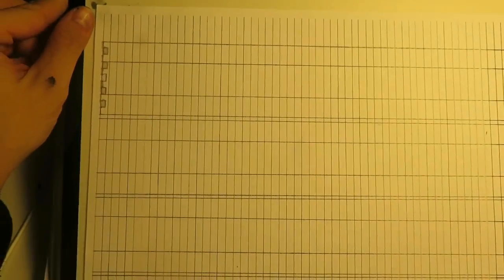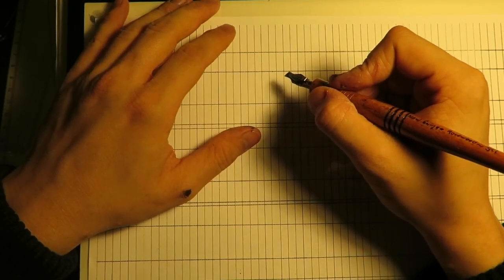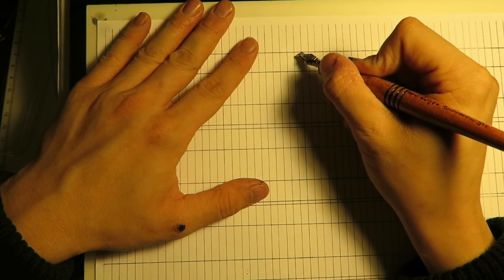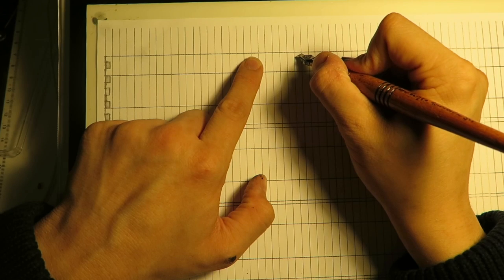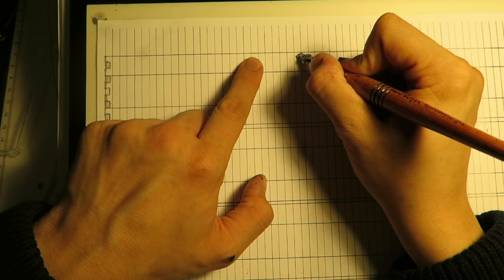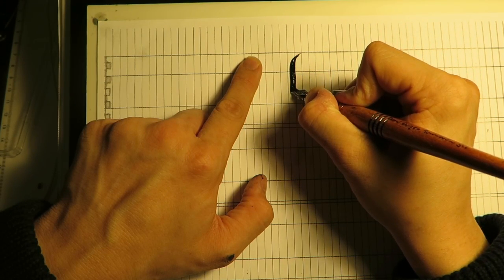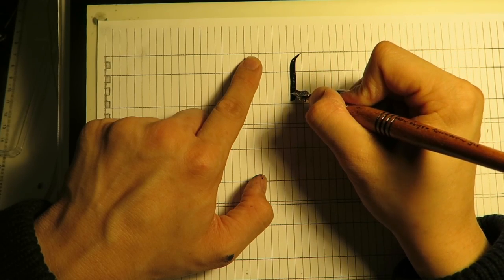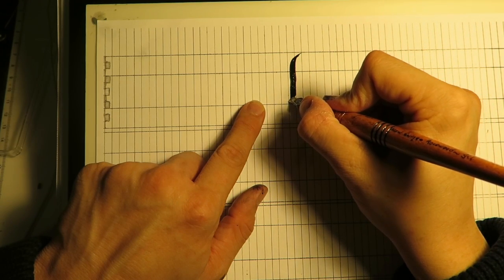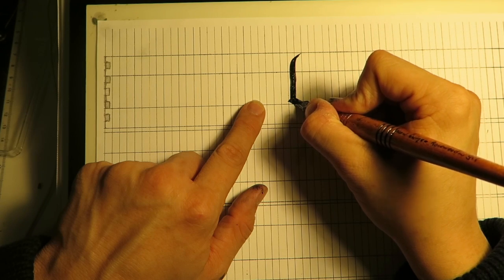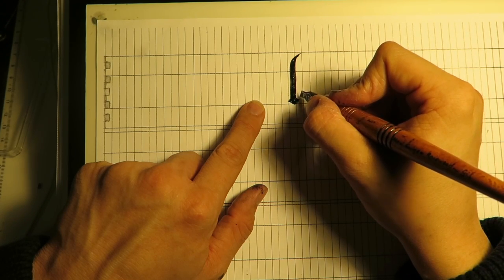The L is formed by starting with your nib at 45 degrees as per usual, at the top of your ascender line, and you pull down into a slight curve, and then straighten out, and pull straight until you reach just above the bottom of the X height, and then you form a slight diamond shape by pulling diagonally down and to the right, like we've done with the terminating strokes for most of these letters.